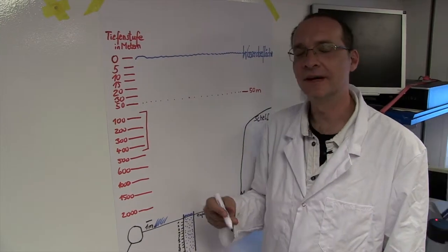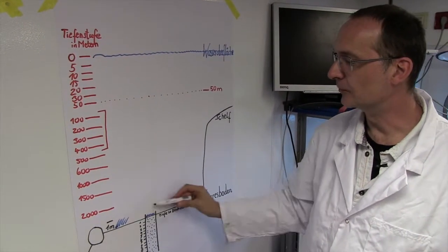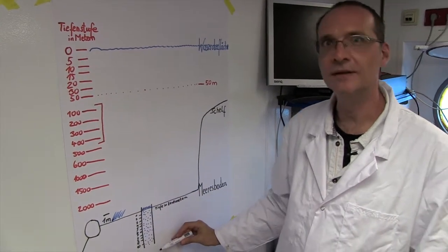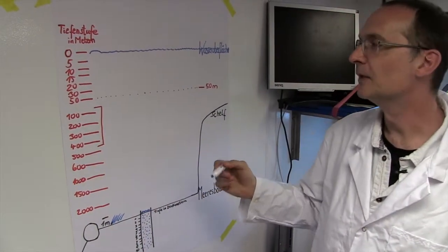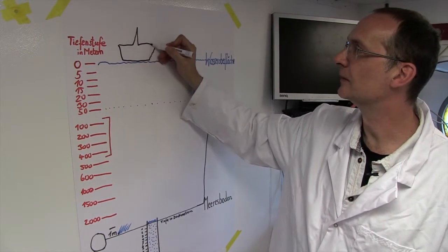In order to research the distribution of these nutrients in the water column on the seabed and in the sediment, we use a variety of devices on the Meteor.